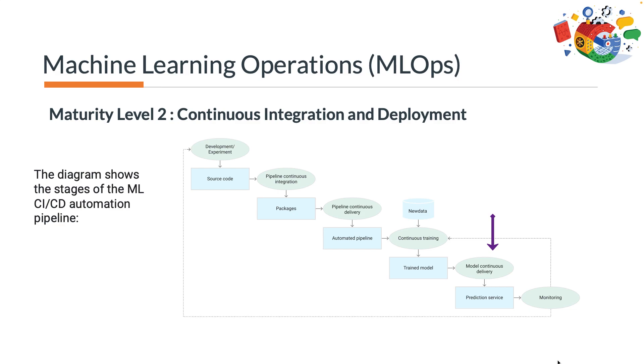Stage 5 is model continuous delivery: you serve the trained model as a prediction service for predictions. The output of this stage is a deployed model prediction service.